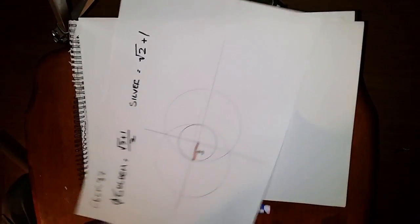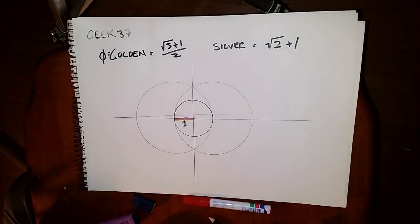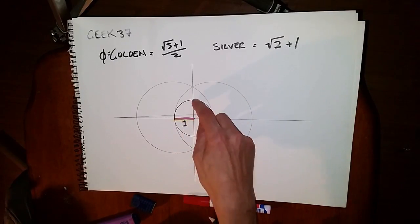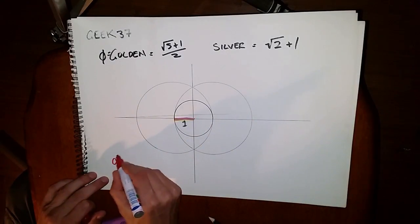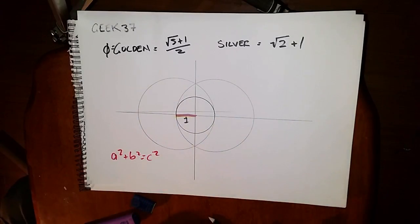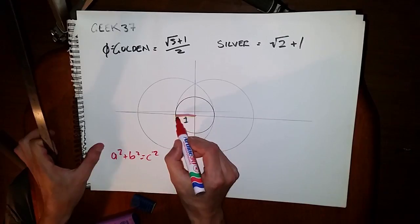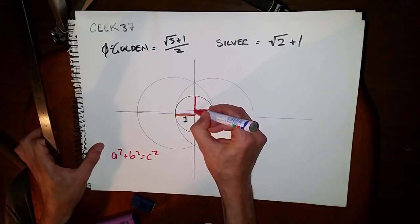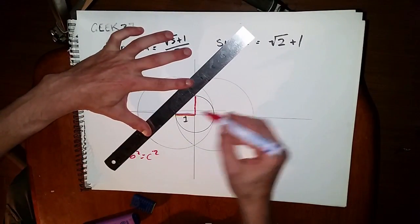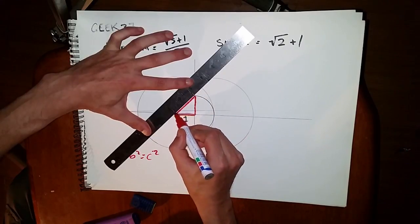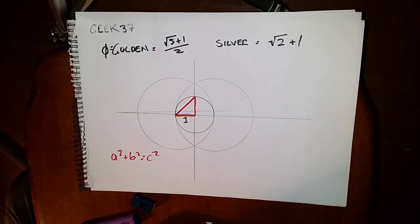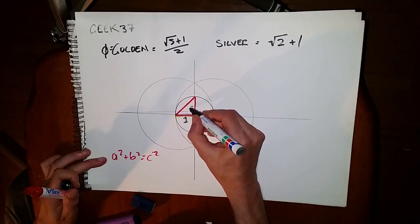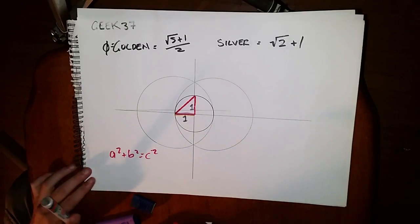And now we just bring in a squared plus b squared equals c squared, so we have Pythagorean theorem. So we know that that is one, that is one also. And so if I create this triangle, now we have one, this is also one. Now a squared plus b squared equals c squared.